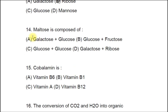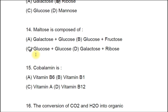Question 14: Maltose is composed of A) Galactose plus Glucose, B) Glucose plus Fructose, C) Glucose plus Glucose, D) Galactose plus Ribose. The correct answer is C, Glucose and Glucose. In maltose, the glucose monomers are linked by an alpha-1,4 glycosidic linkage.